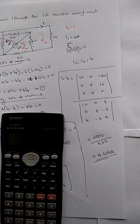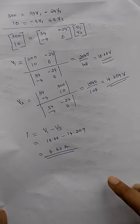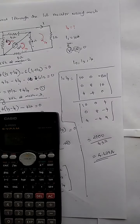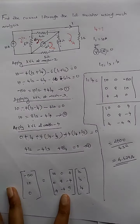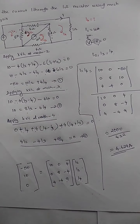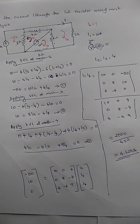We got I4 = 4.629 amperes, which means our assumed direction is the same as the original direction. This is exactly the same answer we obtained previously using nodal analysis — confirming that by using any method, the answer will be the same. If you have any doubts, let me know; otherwise we will move on to the next topic. Happy learning!